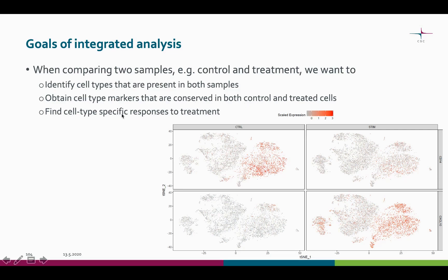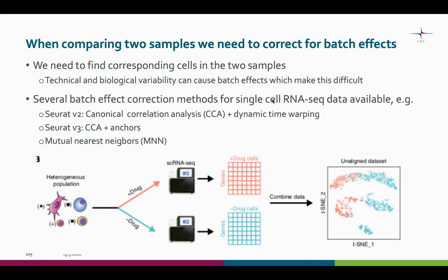And you might also want to find cell type specific responses to the treatment. Now that we are comparing two samples, we have yet again more variability to take into account. We need to correct the batch effect between the two samples, or otherwise we won't be able to find the corresponding cells in the two samples.